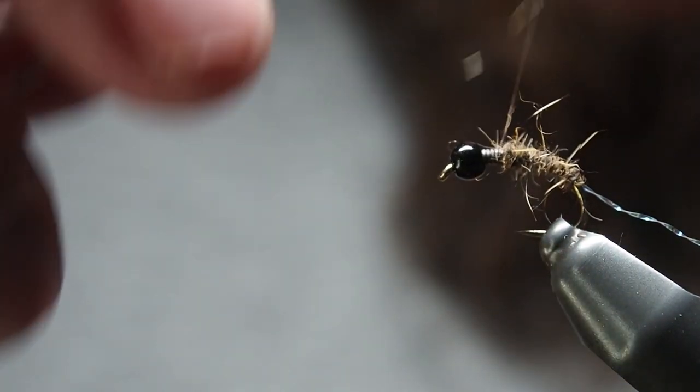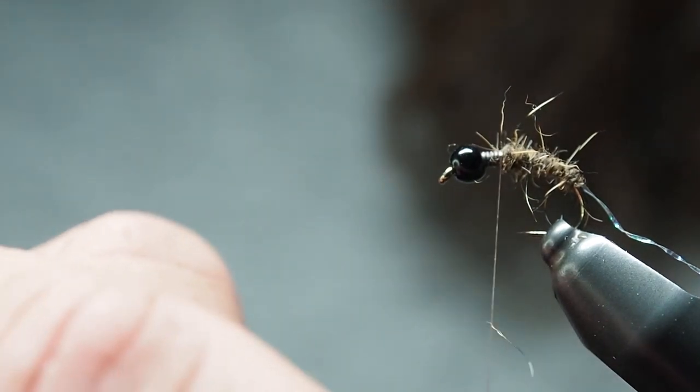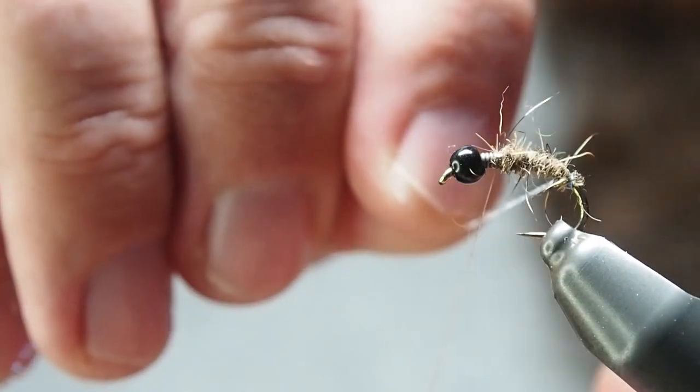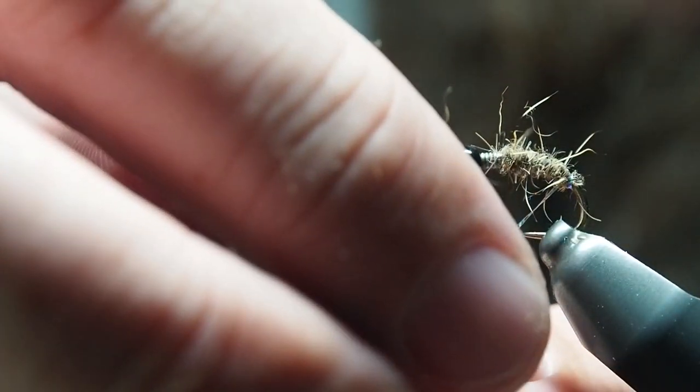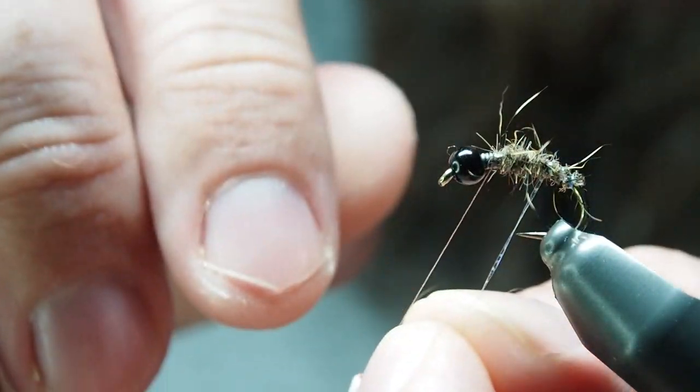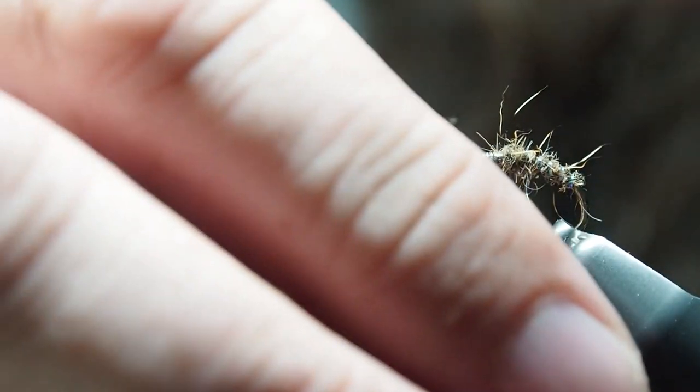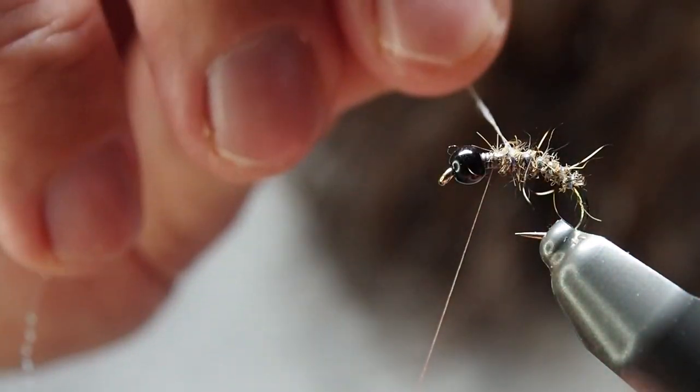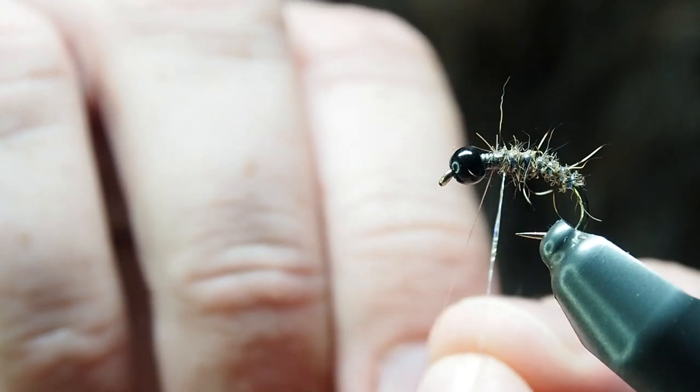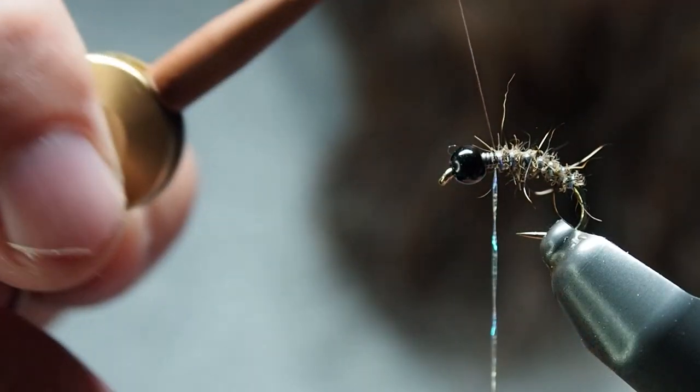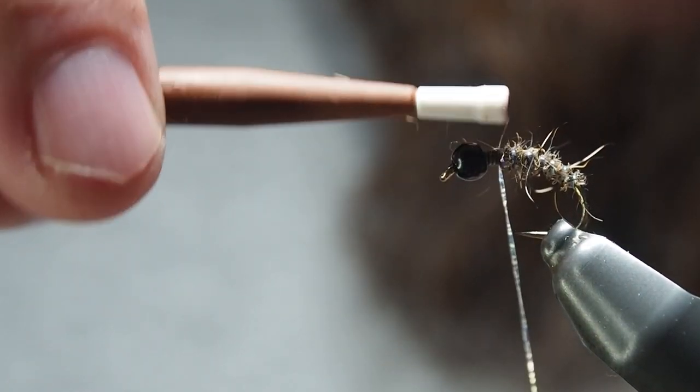Get just up on top of those lead wraps, and take your crystal flash. I just wrap it around, trying not to catch it on the hook. Just getting some ribbing, a bit of color in on it. Try to keep it as evenly spaced as you can. It's a buggy little number. I quite like the way the fox squirrel guard hairs stick out all over the show and add a little bit more movement. Once you've got it up there, secure it and trim it off.